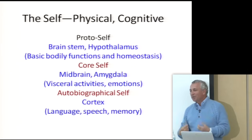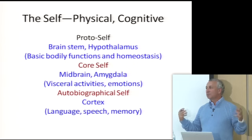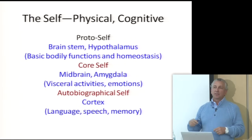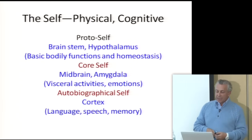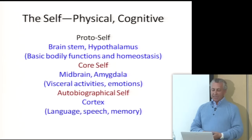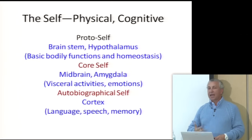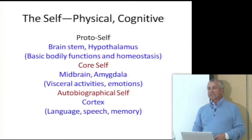Another very important aspect of consciousness is the self. In terms of physiology, there are two kinds of self: the physical self and the cognitive self. Scientist Damasio proposes three values: the proto-self, related to bodily function and homeostasis, located in the brain stem and hypothalamus; the core self, in the midbrain and amygdala, related to visceral activities and emotions; and the cortical self, where you have language, speech, and higher cognitive values of what we understand as the self.